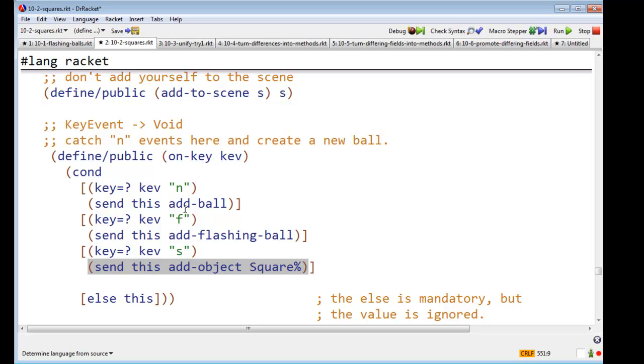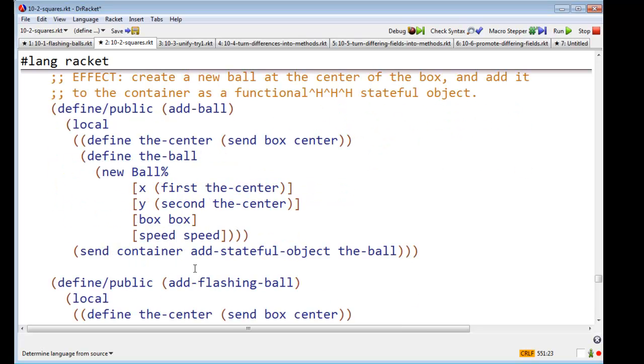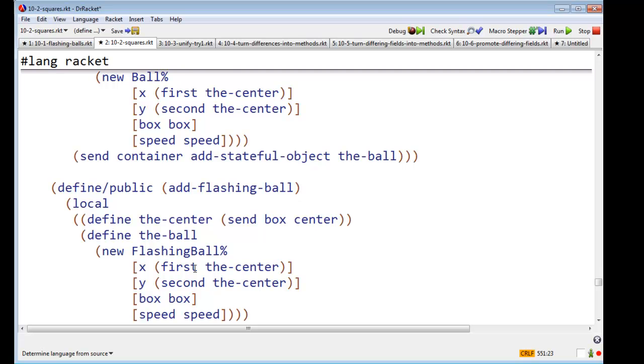So, here I had add-ball, here I had flash, add-flashing-ball, now I said add-object? What's up with that? So here I had add-ball, add-flashing-ball. I said, now, wait a little minute here. I want, can't I unify those?